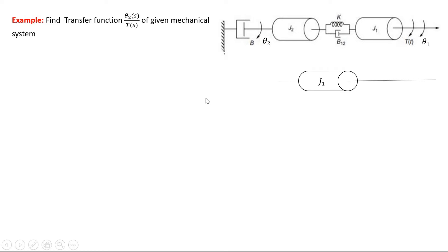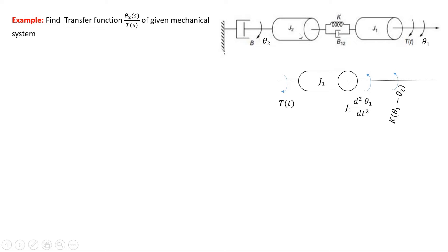For the free body diagram of J1, the applied torque is T(t). The opposing torques are: J1·d²θ1/dt² due to the moment of inertia J1; K·(theta1 − theta2) since spring K is connected between both J1 and J2; and B12·(dθ1/dt − dθ2/dt) since dashpot B12 is also attached to both J1 and J2.